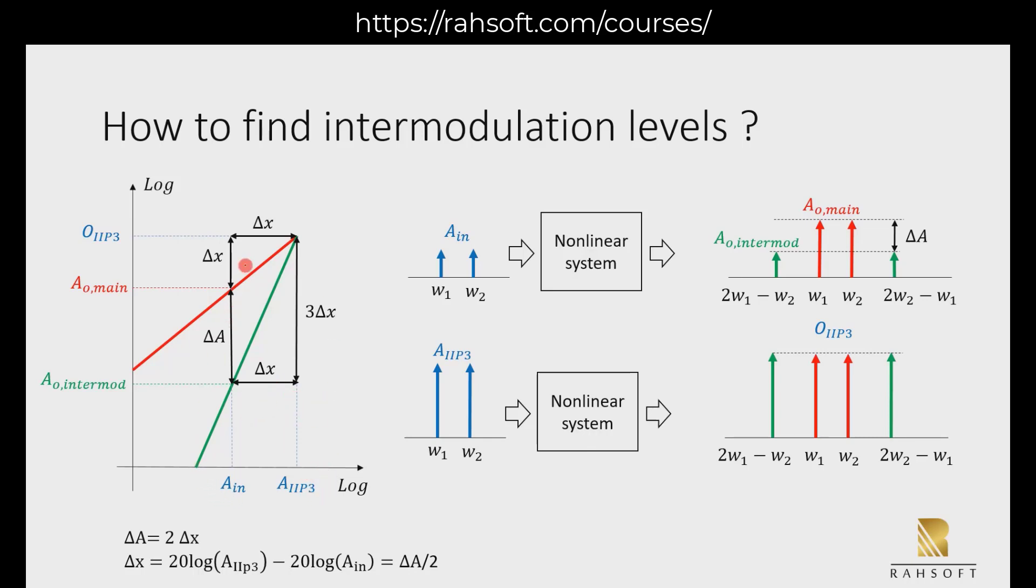Remember that at the first place, we had A_in as our amplitude. So this A_in is here. If you check, A_in gives me the power of A_O main, which is here, and also the intermodulated component at this level, which is basically this one, the power.